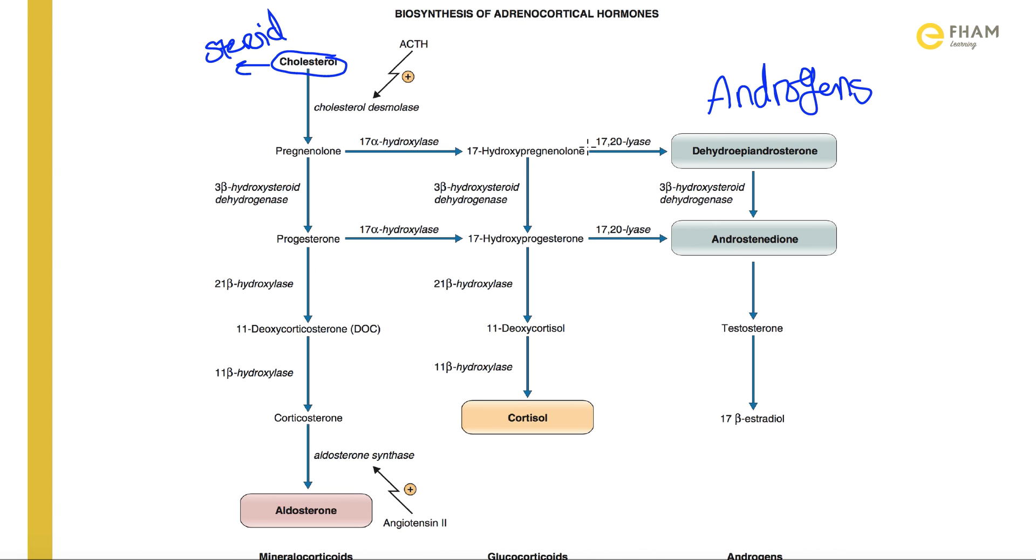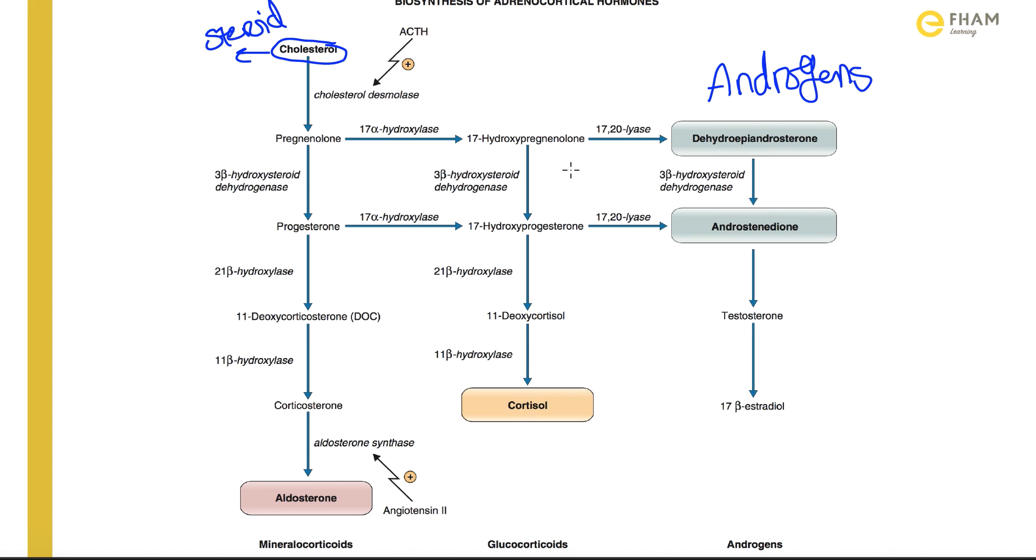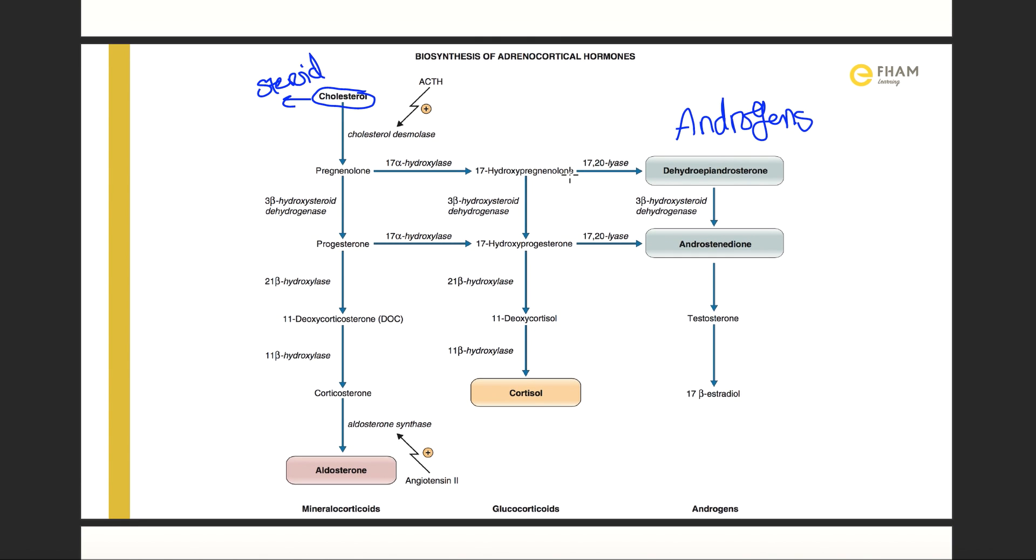Some of the steroids are aldosterone, cortisol, and androgen hormones, which are synthesized by adrenal cortex. The first thing is when there is a stimulus by ACTH which is produced by pituitary gland, which there is a stimulus by hypothalamus to produce it.